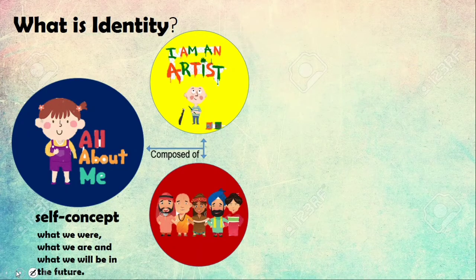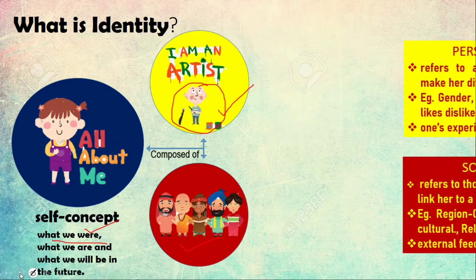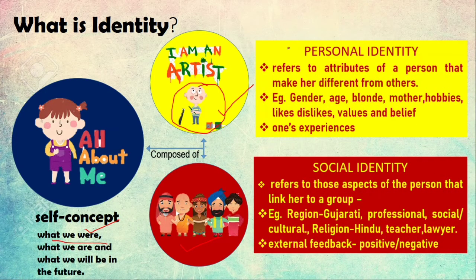Self-concept is what we were, what we are, and what we will be in the future. It is more factual and composed of two elements: personal identity and social identity. Personal identity refers to the attributes of a person that make her different from others — gender, age, hair color, who your mother is, your hobbies, what you like and dislike. What are your values or beliefs? Do you believe in honesty? Are you punctual or do you procrastinate? How have your experiences been?